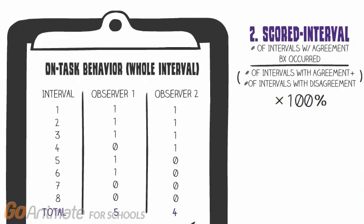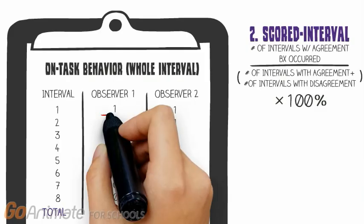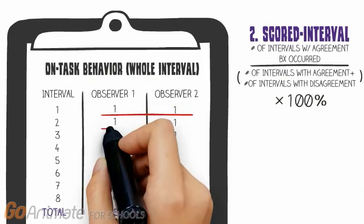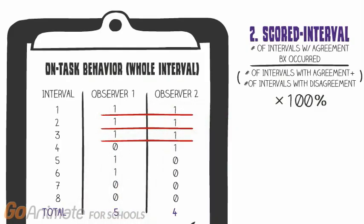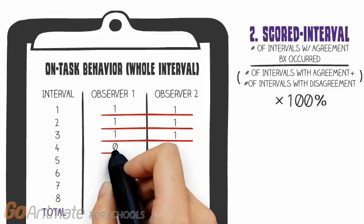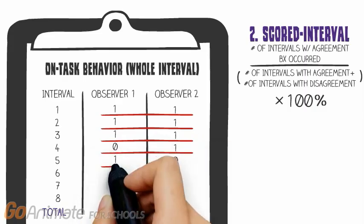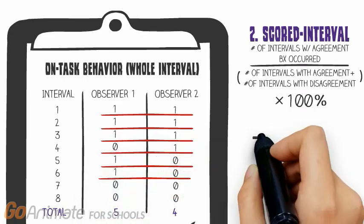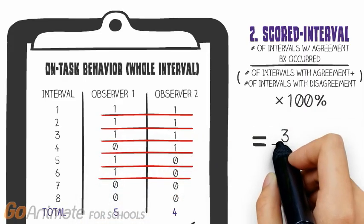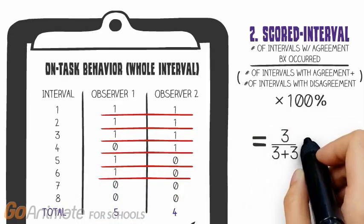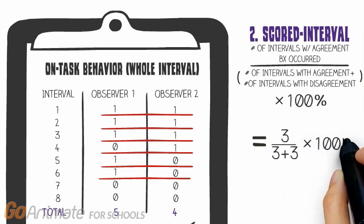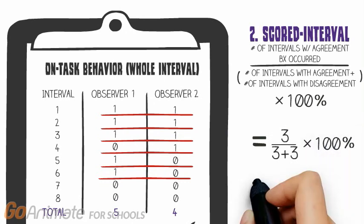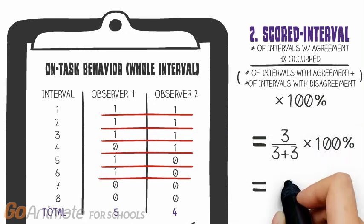Looking at the sample data, at least one observer recorded the occurrence of on-task behavior during intervals 1 through 6. Three of those intervals they agreed, and the other three they disagreed. We divide the agreements by the total agreements plus disagreements and multiply by 100%, resulting in an IOA of 50%.